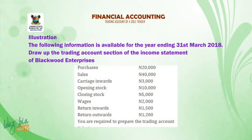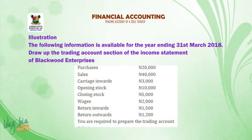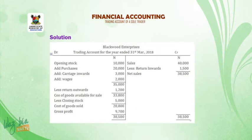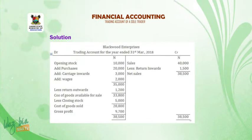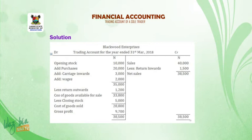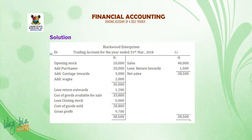Return outwards $1,200. You are required to prepare the trading accounts. Solution: the first thing to write is the name of the organization — Blackwood Enterprises, Trading Account for the year ended 31st of March 2018. On the left hand side, we have opening stock $10,000, add purchases $20,000, add carriage inwards $3,000, add wages $2,000, and we get a subtotal of $35,000.